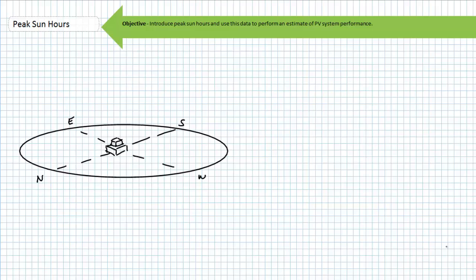Our objective today is to introduce the concept of peak sun hours and use this data to estimate performance of a PV system given geographic location.